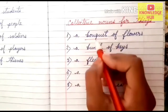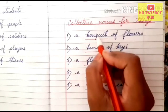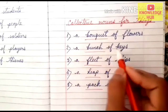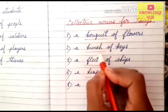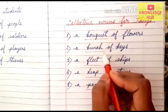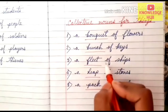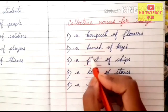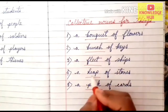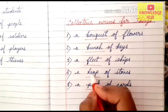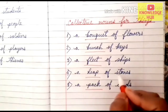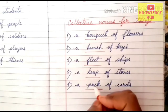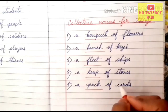A bouquet of flowers — here the word 'bouquet' refers to the group of flowers. A bunch of keys — here the word 'bunch' refers to the group or collection of keys. A fleet of ships — here the word 'fleet' refers to the group of ships. A heap of stones — here the word 'heap' refers to the group of stones. A pack of cards — here the word 'pack' refers to the group of cards.